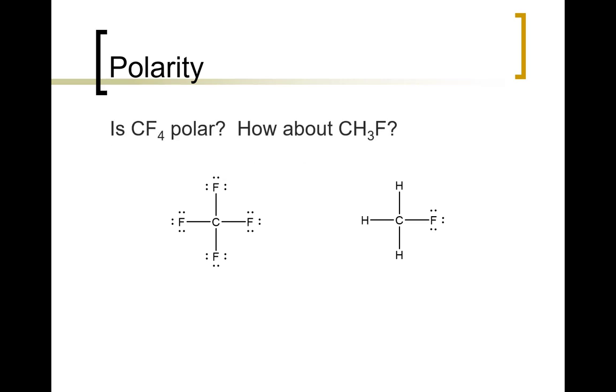Let's take a look at two compounds which might be a little bit more confusing. First of all we have CF4, carbon tetrafluoride. Let's go ahead and look at that. We have carbon with electronegativity of 2.5 bonded to fluorine with electronegativity of 4.0. That's a big difference. Each one of those bonds are polar.